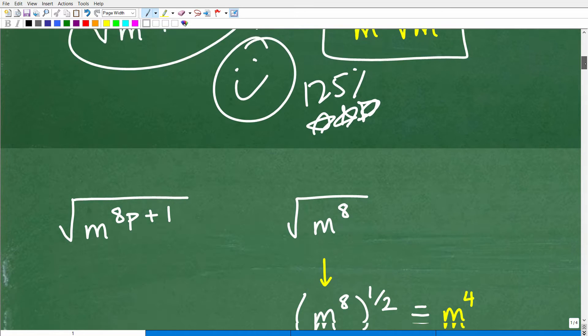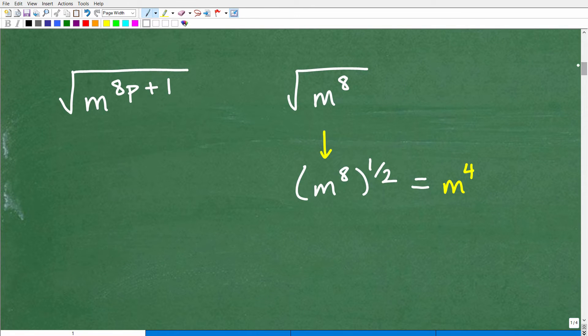And as we do this, we're going to actually review just some basic things about square roots. So instead of m to the 8p plus 1, let's just make sure you can take the square root of m to the 8th. So how do we do a problem like this? Well, what you want to do is you want to convert your square root to the 1 half power.